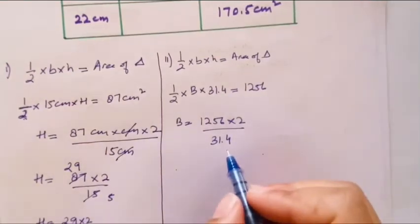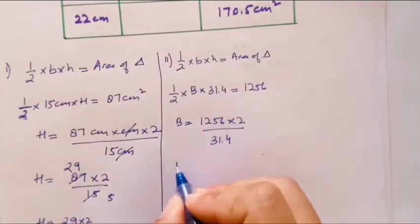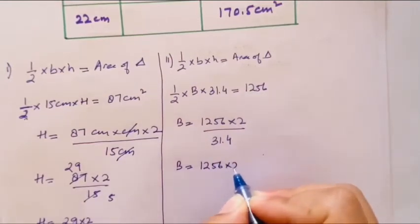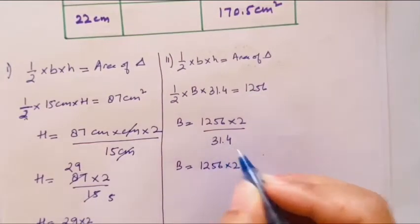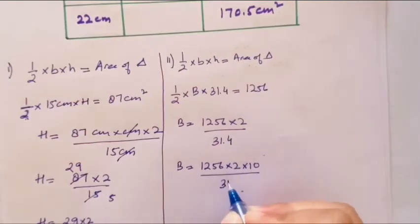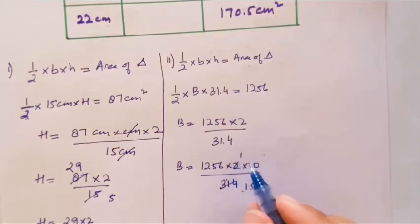You can see here, the decimal will be equal to 1256 into 2. Now the decimal is one, so base equals to 1256 into 2 upon 314. Again, 157 into 14, that will be 157.